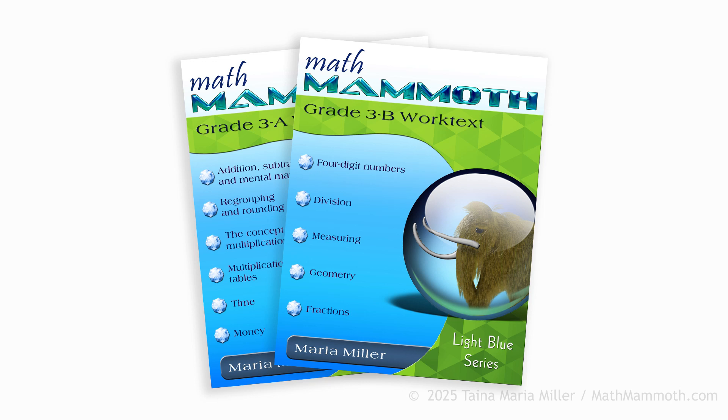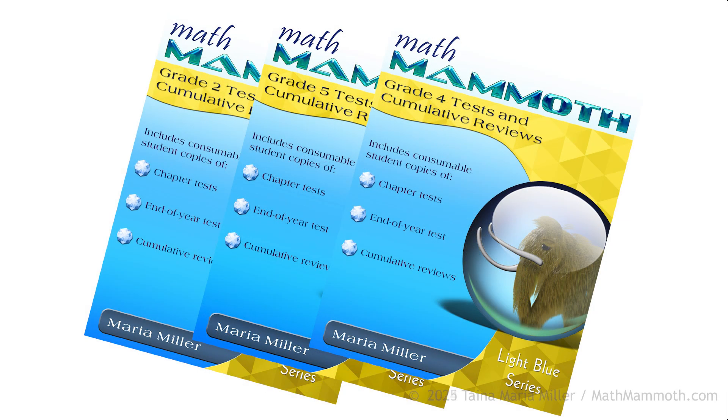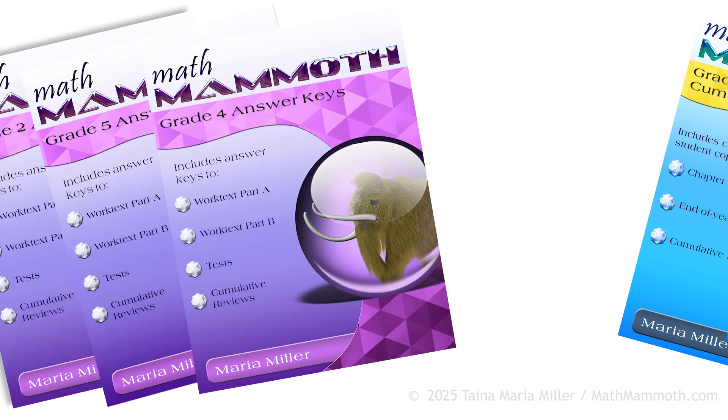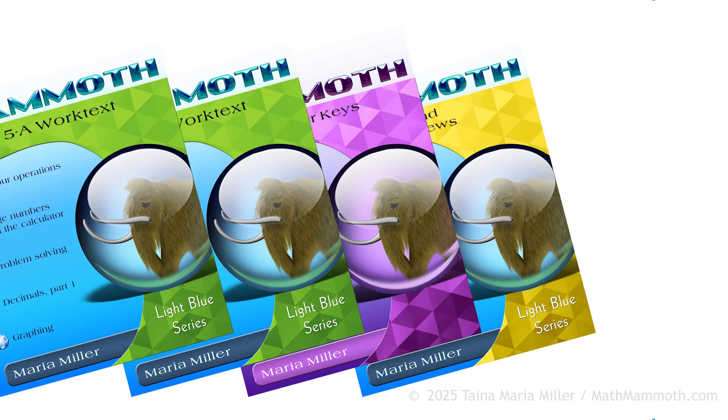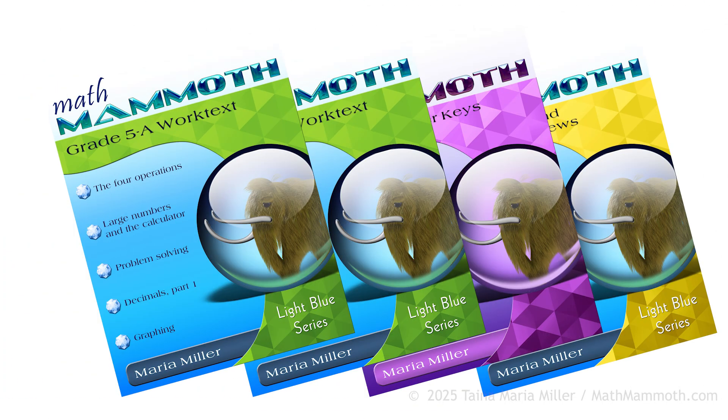So we have two student work texts, A and B. Then if you get the printed books, then there's a book that contains tests and additional cumulative reviews. And then there's an answer key book. If you get the printed version, there's therefore four books in total that you can get.